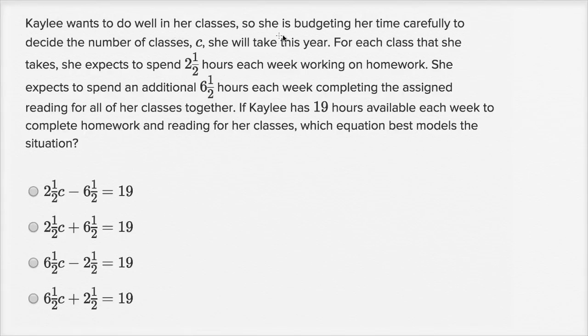Kaylee wants to do well in her classes, so she is budgeting her time carefully to decide the number of classes C she will take this year. For each class that she takes, she expects to spend 2½ hours each week working on homework. She expects to spend an additional 6½ hours each week completing the assigned reading for all of her classes together. If Kaylee has 19 hours available each week to complete homework and reading for her classes, which equation best models the situation?